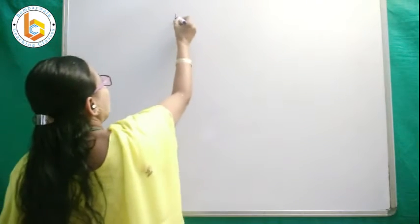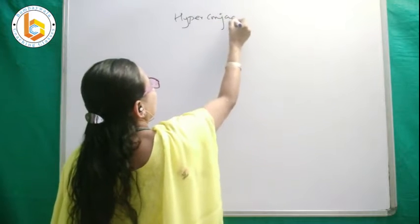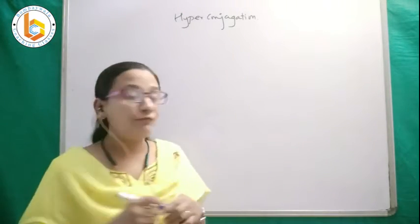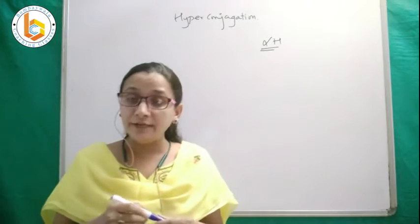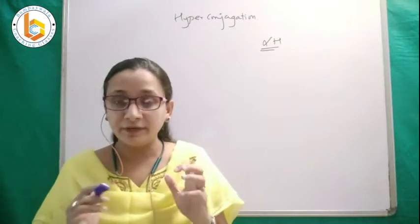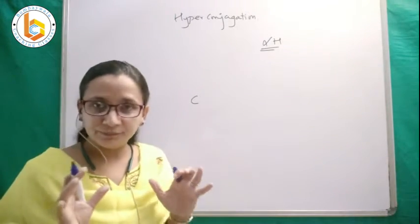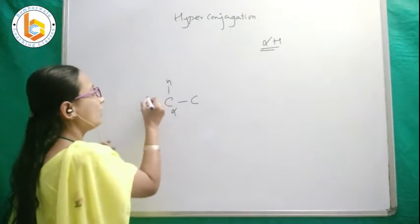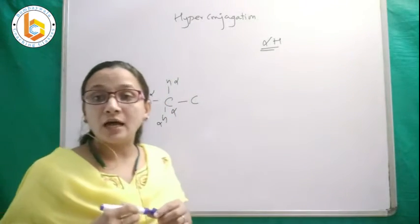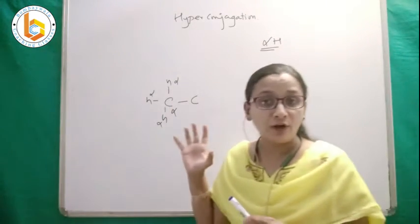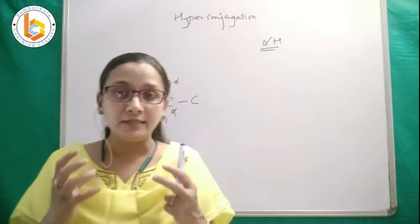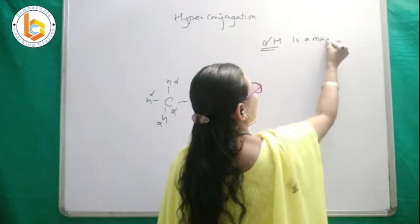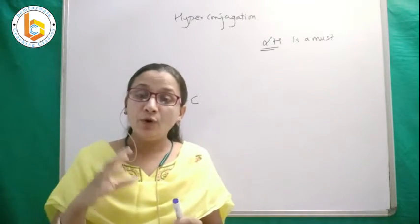Before I define hyperconjugation, let me introduce you to the concept of alpha hydrogen. I have already created a video explaining what alpha hydrogen is. For example, consider one carbon. If this carbon is attached directly to another carbon, that second carbon is called the alpha carbon, and the hydrogens attached to it are called alpha hydrogens. Alpha hydrogens are very acidic and can leave the system very easily. For any system to show hyperconjugation, the presence of alpha hydrogen is a must — this is one important parameter. Do watch the video on alpha hydrogens in detail first.